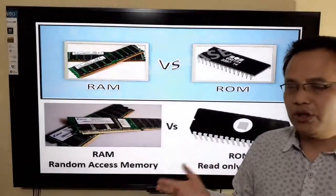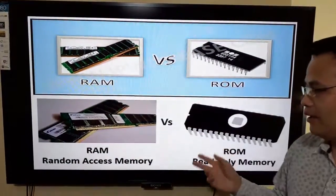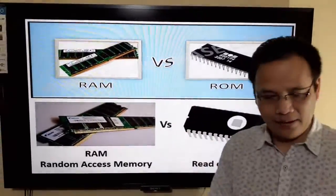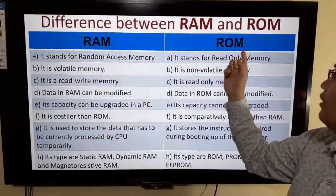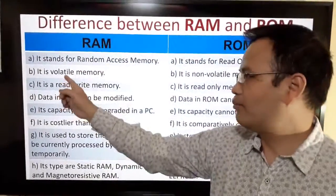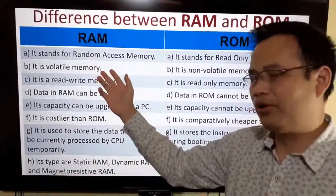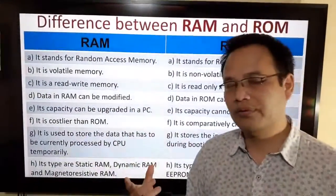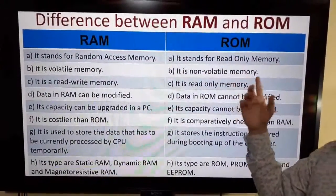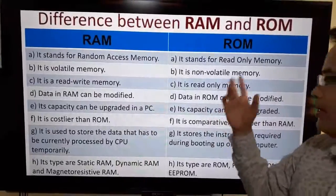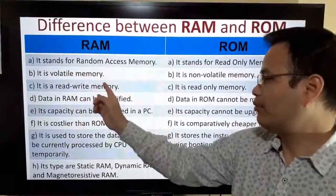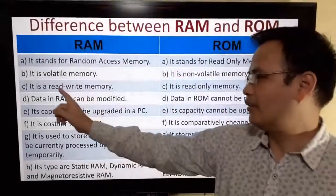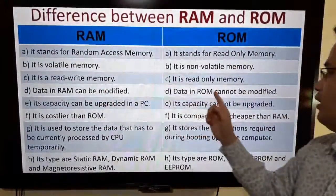Now let's see the difference between RAM and ROM. Both are primary memory but they have some differences. RAM stands for Random Access Memory and ROM stands for Read-Only Memory. RAM is a volatile memory, meaning it is temporary — the contents of RAM are lost once the computer is switched off. ROM is non-volatile memory, meaning it is permanent — the content remains whether the computer is switched on or off. RAM is a read-and-write memory whereas ROM is read-only memory. Data in RAM can be modified whereas data in ROM cannot be modified.